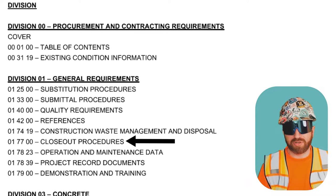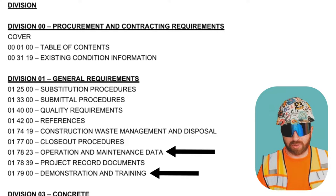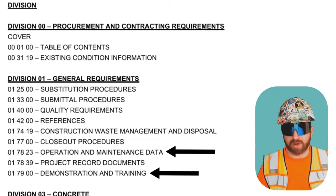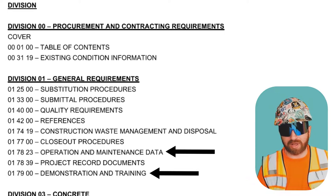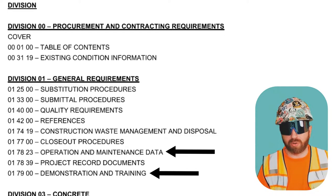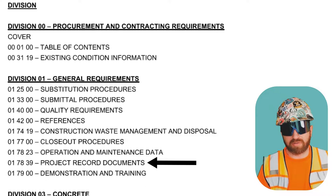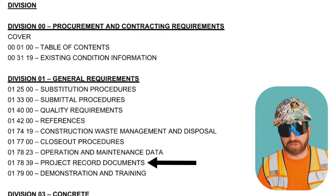Closeout procedures are everything you need to do at the end of the project. Operation and maintenance data — when you turn over a new building, your owner typically doesn't know how to use everything within it. This section outlines what you need to turn over and how you need to train your owner so that they're ready to use their new building. Project record documents is everything you hand over to the owner as part of that final package, including warranties, substantial completion letters, occupancy permits, and so forth.